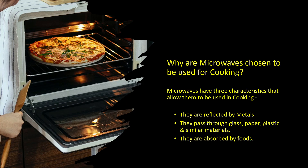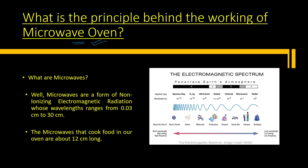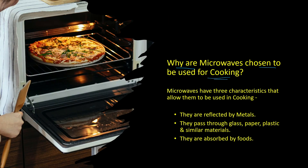The second question that needs to be answered: why are microwaves chosen to be used for cooking? Why not other waves like gamma rays, X-rays, ultraviolet rays, visible, infrared, or radio waves? Because microwaves have three important characteristics that allow them to be used in cooking.